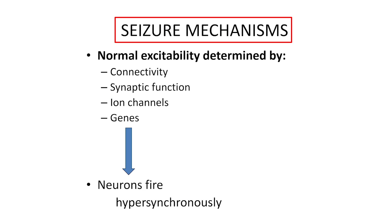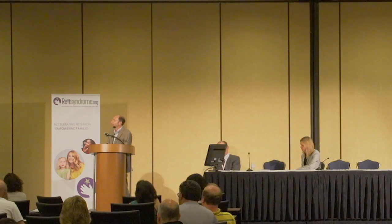I like to think about seizure mechanisms from the top down. Dysfunction at any level can cause a seizure. Connectivity means how neurons and brain cells are connected together — they're connected by synapses. Ion channels are membrane proteins in the cell's membrane that determine how excitable the cell is, how much it will fire off. And then genes control all of that.